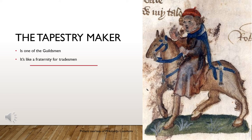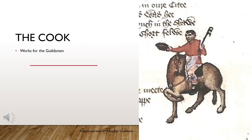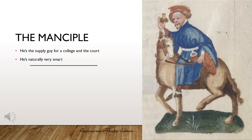It makes sense why all five guildsmen are in the same group. The cook works for the guildsmen and isn't really talked about much, except that he has a crusty sore on his leg — not exactly what you'd want in someone preparing food. Then there's the Manciple, basically the supply guy who gets whatever a college or court needs. He particularly works for lawyers, and though he is lower than the people he serves, he's actually much smarter than a lot of them.